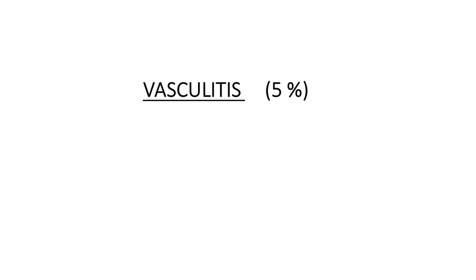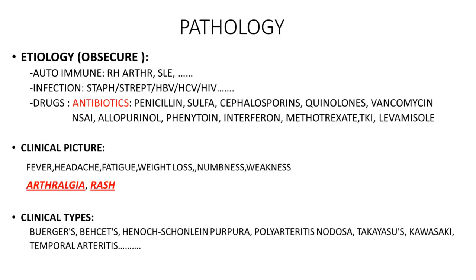Vasculitis is an inflammatory process affecting vessels in around 5% of the general population. Etiology includes autoimmune disorders like rheumatoid arthritis and SLE, bacterial or viral infections, and drugs. The most frequently implicated drugs include antibiotics such as penicillin, sulfa, cephalosporins, and quinolones, as well as NSAIDs, diuretics, anti-epileptics, immunosuppressive drugs, and anti-helminthic drugs.